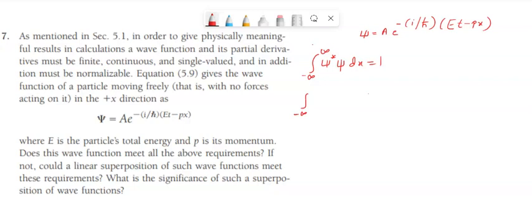Integration from minus infinity to plus infinity. Here ψ star is A into e to the power... the complex conjugate of i is minus i, so minus into minus plus, that will be i/ℏ times Et minus px into ψ, which is A into e to the power minus i/ℏ times Et minus px into dx.